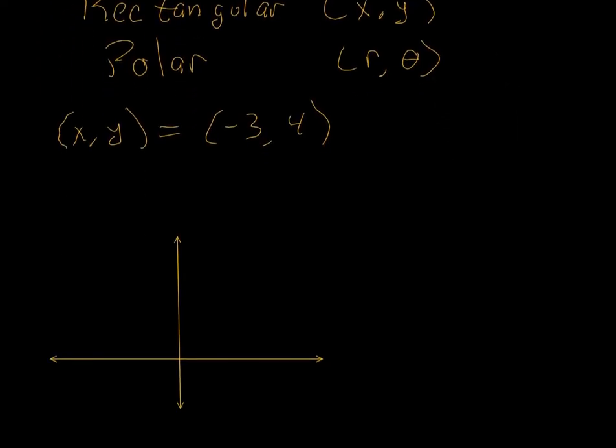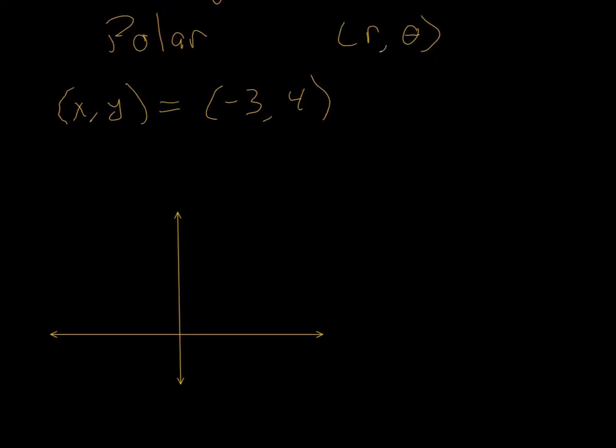So we're gonna look at an example here. What if we're going to take the point negative three, four, which lies here in the second quadrant? If that's the Y and that's the X axis, and if we were to sort of build a triangle here, that would be R.